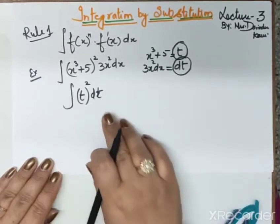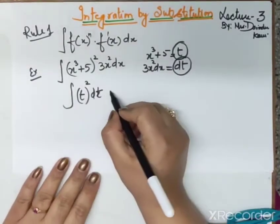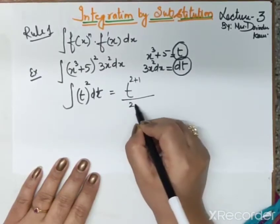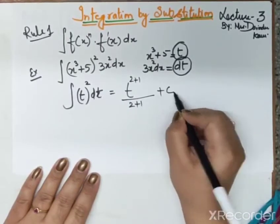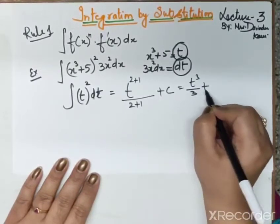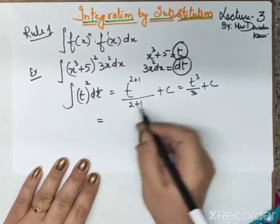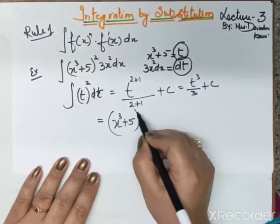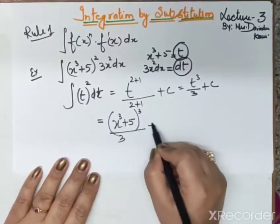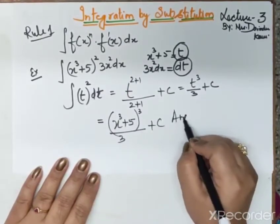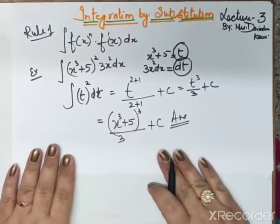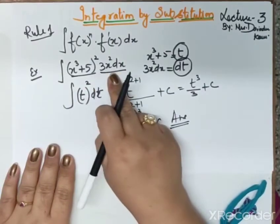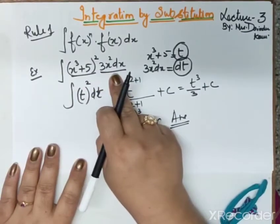So now we are going to integrate this function. The answer will be t^(2+1) / (2+1) + c, i.e., t³/3 + c. This is the way to solve such expressions.